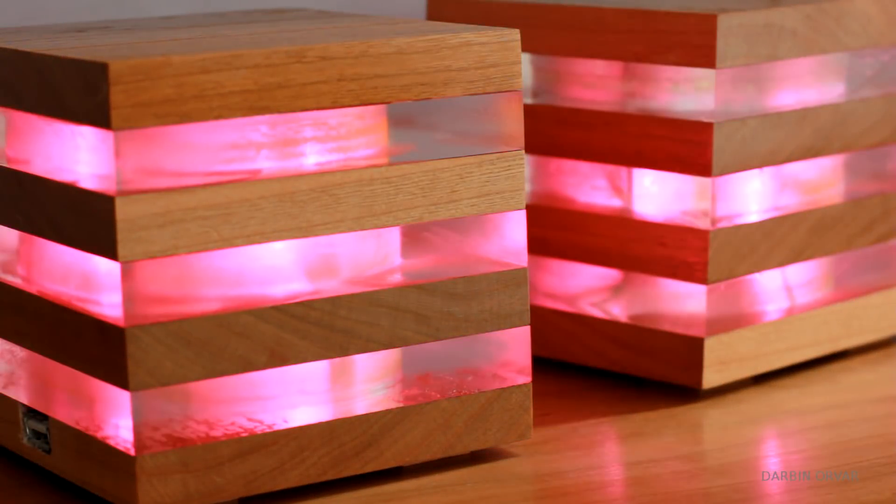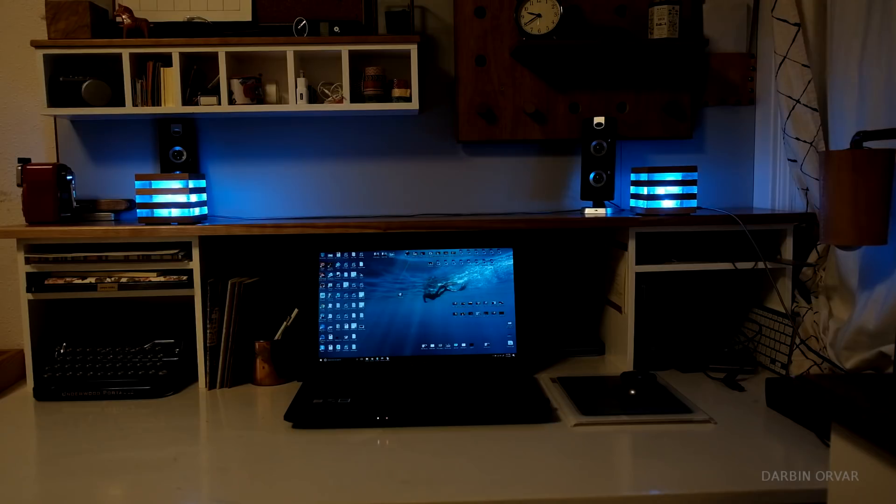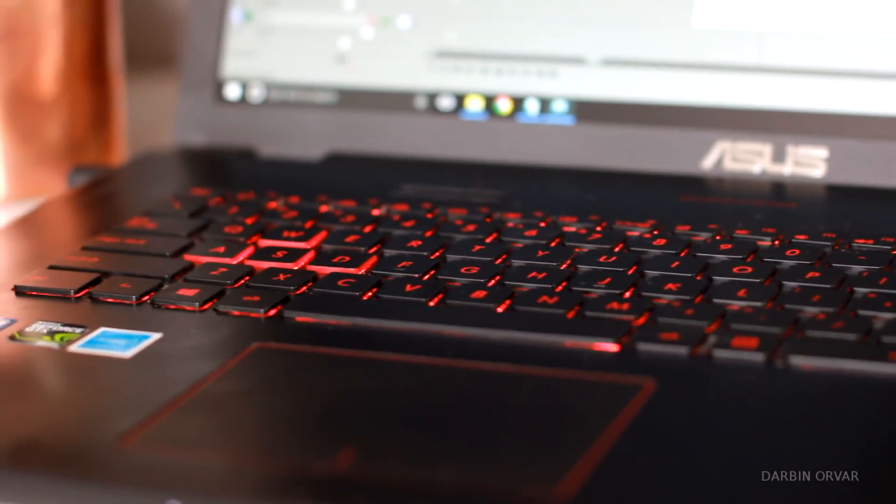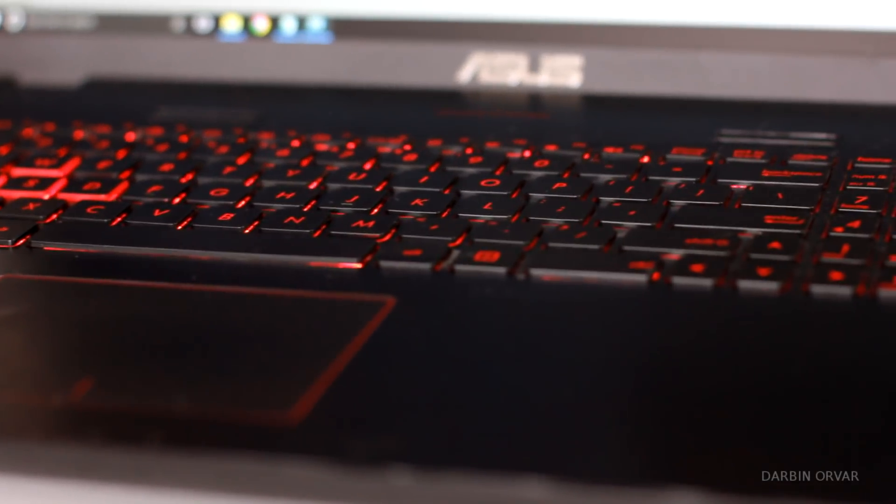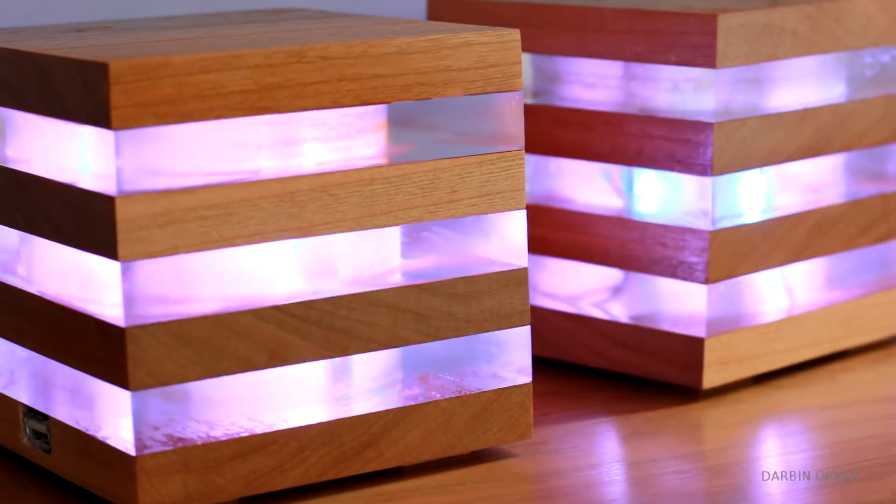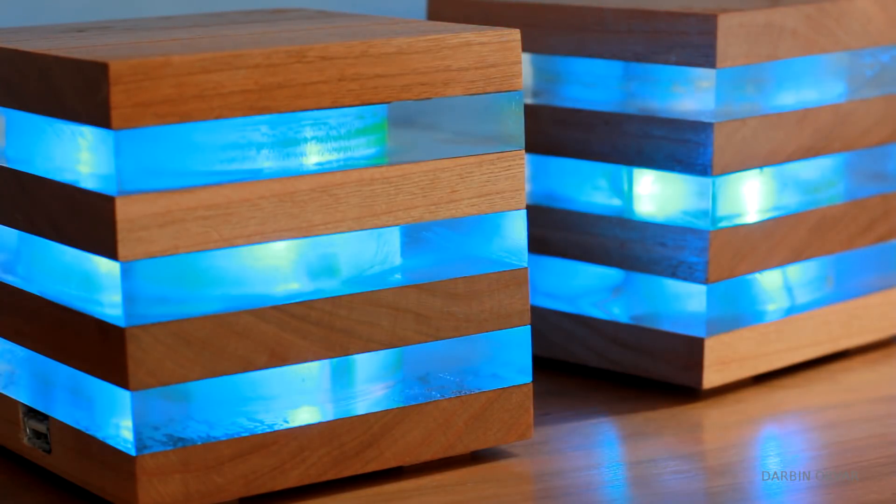Today's project are these wood and acrylic LED cubes. They utilize RGB light strips, they are daisy chained together, and they are made to match my gaming slash editing laptop that has a cool red light coming up through the keys. I think they came out pretty cool, these light cubes, so let's get into the build.